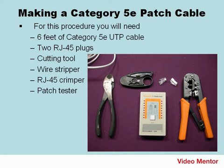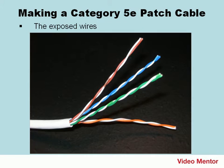With the wire stripper, remove about two inches of the PVC, or plastic, jacket from one end of the cable and you'll see the exposed wires. When you remove that plastic jacket, you'll see the eight wires twisted together into four pairs — hence the name Twisted Pair.